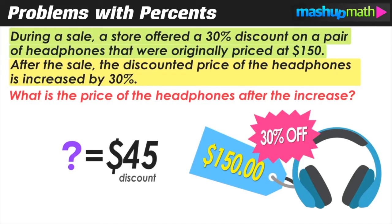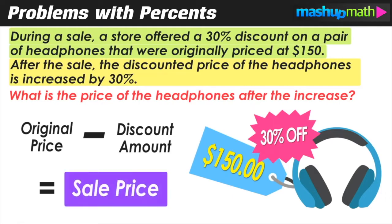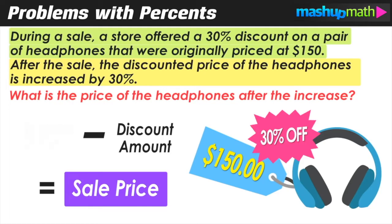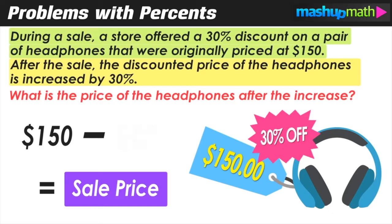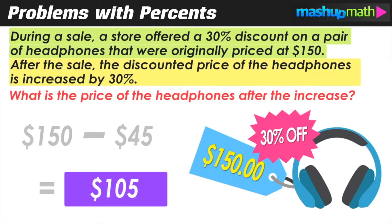So 30% off of $150 is a $45 discount. The discounted price of those headphones can be found by subtracting 45 from 150 — taking the original price and subtracting the discount amount. $150 minus $45 gives us a sale price of $105.